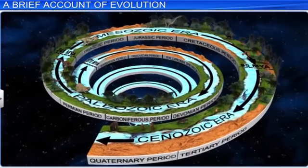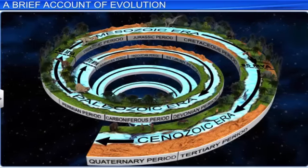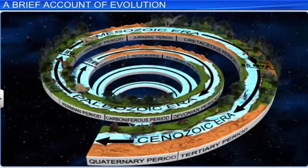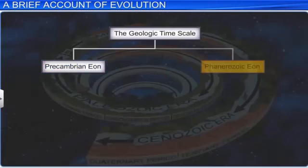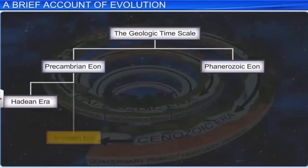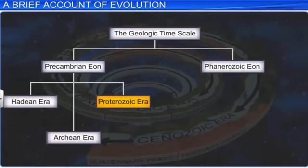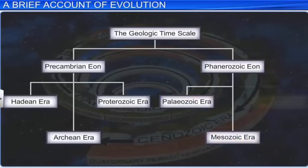Let's look at the geological time scale to understand which different events occurred at what time in the history of the earth. The geological time scale is divided into two aeons: pre-Cambrian and Phanerozoic. The pre-Cambrian aeon is divided into Hadean, Archean, and Proterozoic eras. While the Phanerozoic aeon is divided into Paleozoic, Mesozoic, and Cenozoic eras. Different life forms evolved in the three eras of the Phanerozoic aeon.